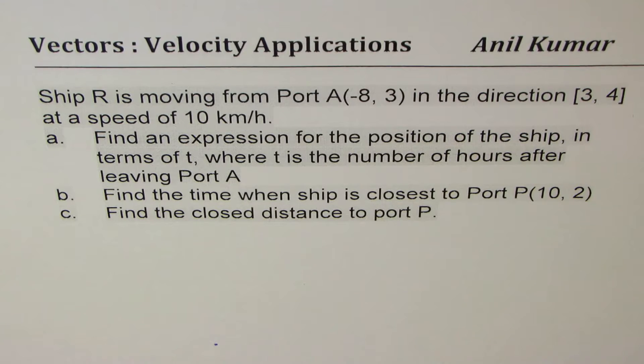Ship R is moving from Port A at (-8, 3) in the direction [3, 4] at a speed of 10 kilometers per hour. Find an expression for the position of the ship in terms of T, where T is number of hours after leaving port A.